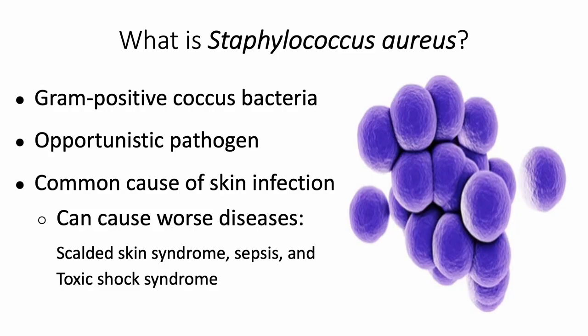What is Staphylococcus aureus? It is a gram-positive coccus bacteria, and it can become an opportunistic pathogen, which is an infection caused by pathogens that take advantage of opportunities not normally available, like a weakened immune system. It is a common cause of skin infection and can lead to worse or life-threatening diseases, like the ones mentioned on the screen.